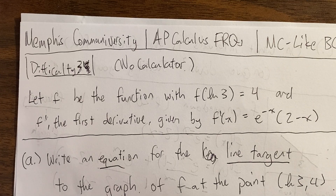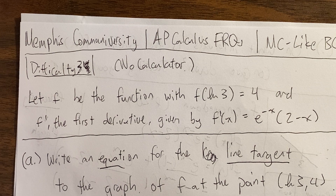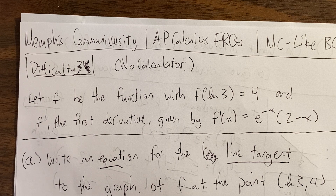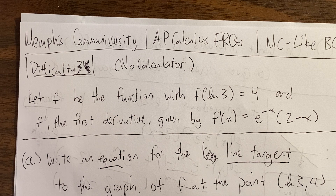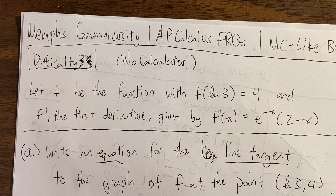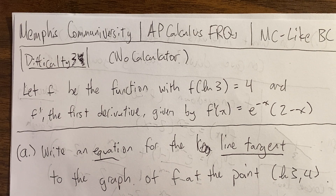Integration by parts is essentially a 50% chance to appear significantly on the BC exam, with partial fractions being the other 50%. In this question it could be worth four out of nine points — the difference between a 3 and a 4 or a 4 and a 5. Keep watching the series from difficulty 1 through 10 to see trick questions and review a wide range of topics. Thank you very much — see you at difficulty 4!